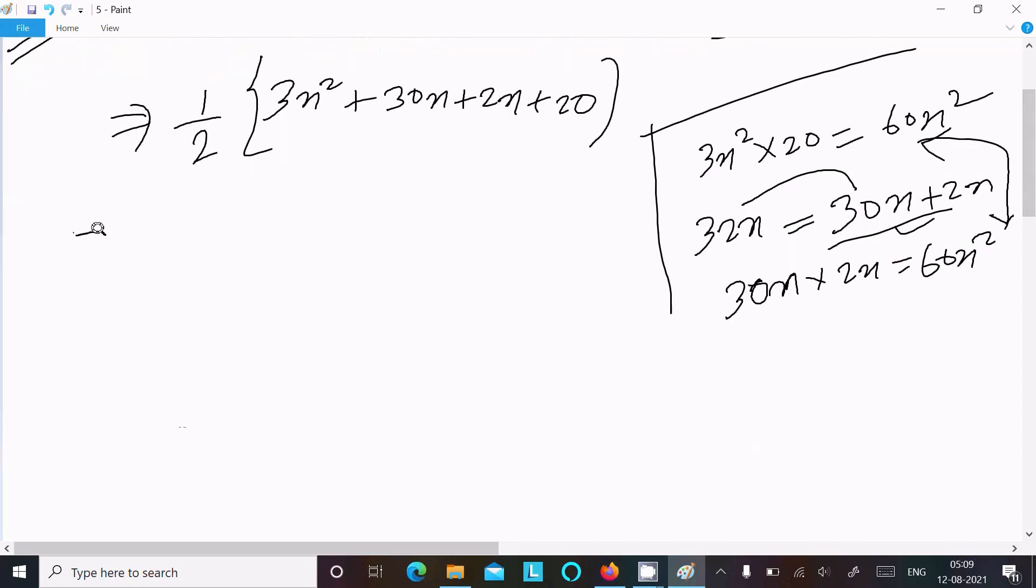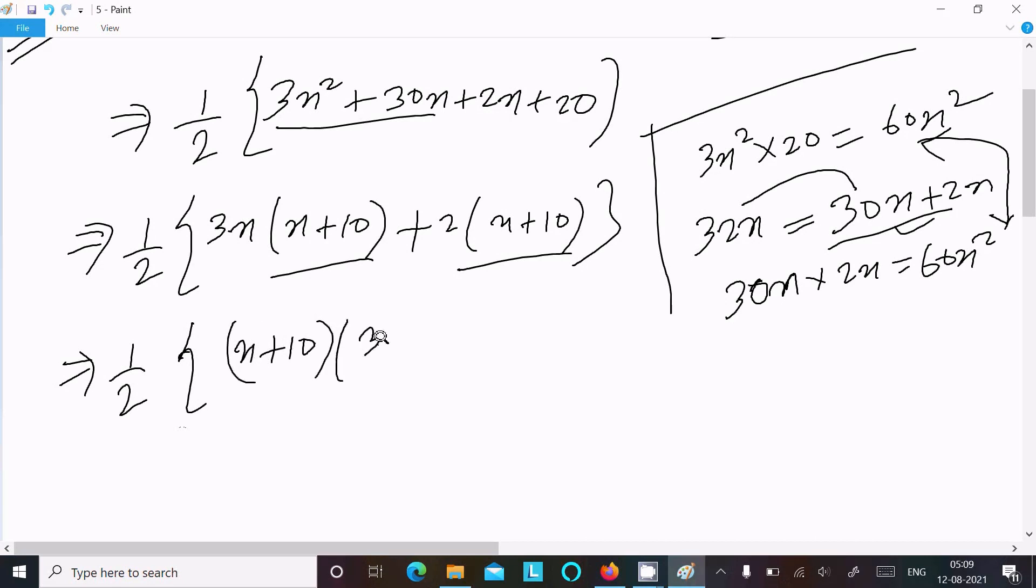After that, write here 1/2. Take the common, so 3x is the common, so here x plus 10. This here 2 is the common, so x plus 10. Now 1/2 here, so here x plus 10 is the common, so x plus 10 here, 3x plus 2.